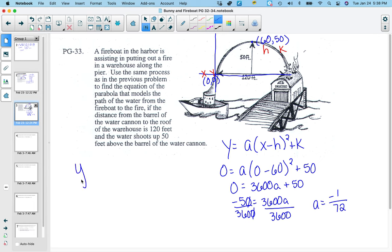So now I'm ready to write out my equation y equals negative 1 over 72. And notice we got a negative and notice it opens down, that makes sense. X minus 60 quantity squared plus 50. So this equation would model this situation.